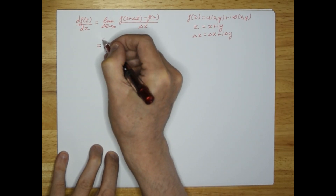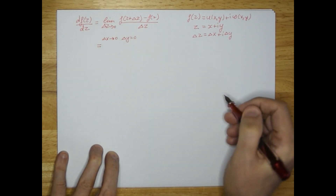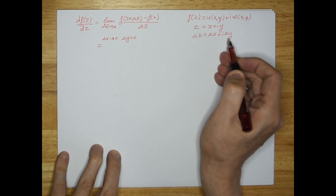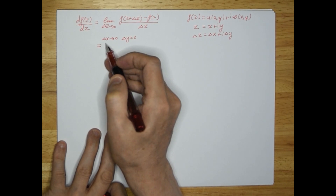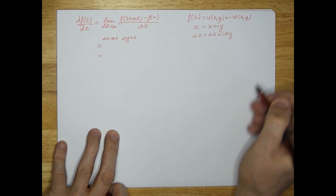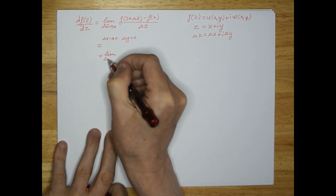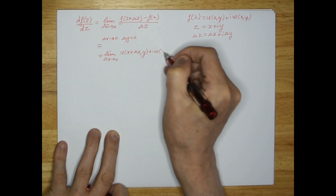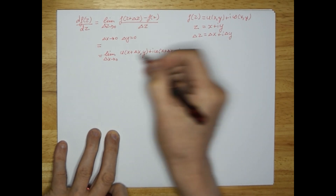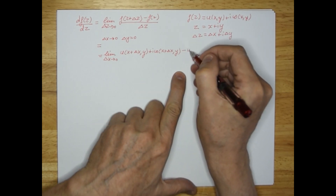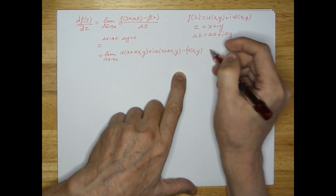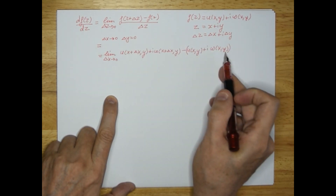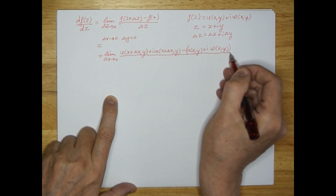So what we're going to do is first say: let delta x go to zero and delta y equals zero. We approach this differentiation by ignoring y for now and see what happens if we just take delta x going towards zero. Writing that out, we get the limit as delta x goes to zero of u(x + delta x, y) plus i·w(x + delta x, y), minus u(x, y) plus i·w(x, y), all divided by delta x.